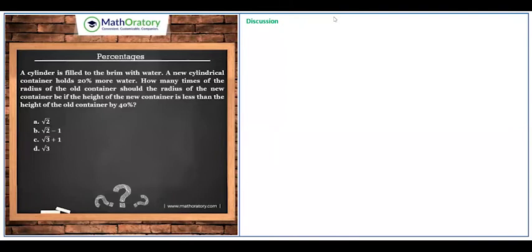For this question, I'd like to discuss a very simple approach to tackle these kinds of questions. For this particular question, you need to know the relationship between the volume, the radius, and the height of the cylinder. The volume of a cylinder is given by π r² × h.